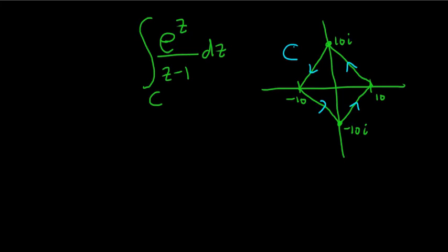To do this problem, we can use something called Cauchy's integral formula. Cauchy's integral formula is the following: if you have a contour C, then you have f of z dz over z minus z_0 under some certain conditions. This is equal to 2πi f of z_0.